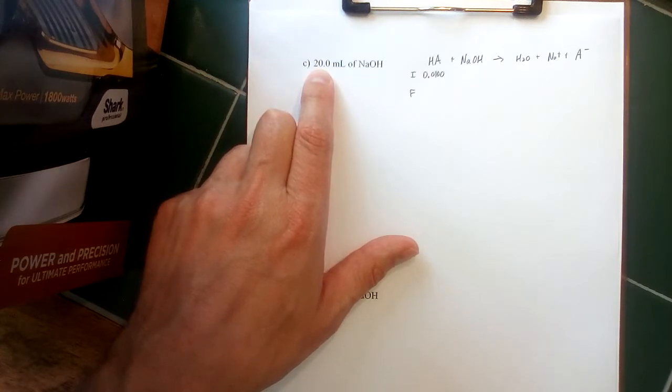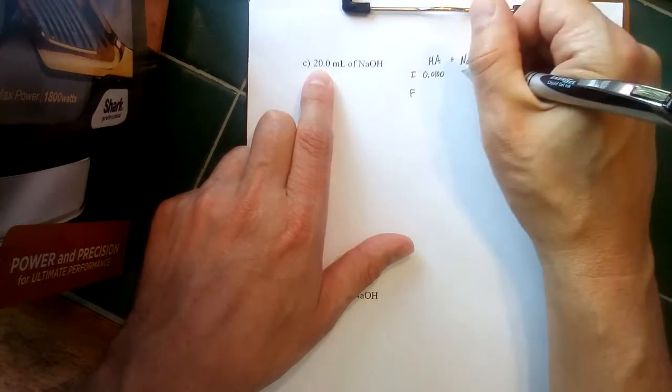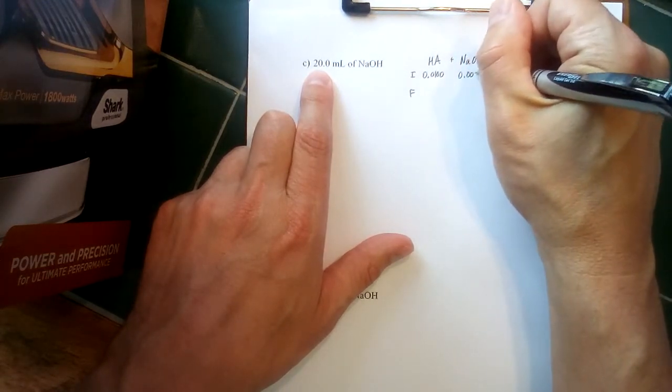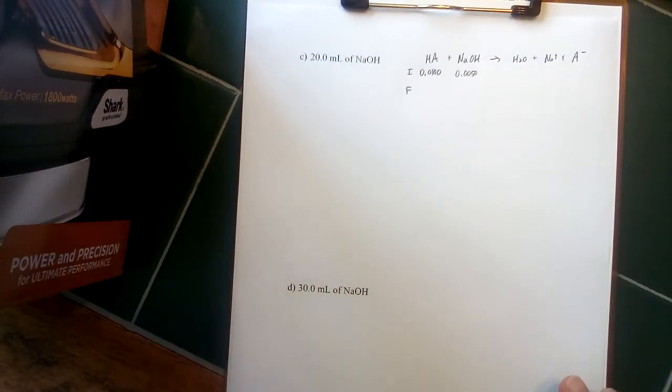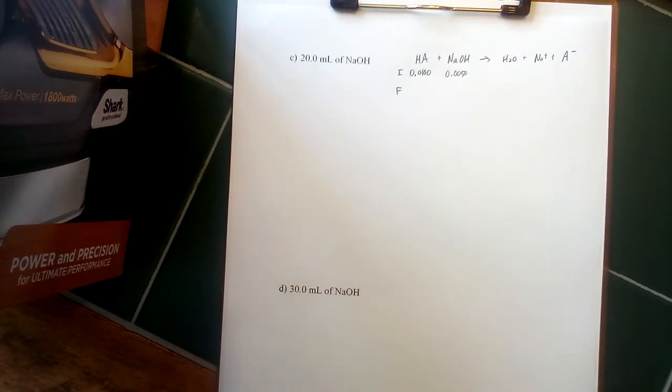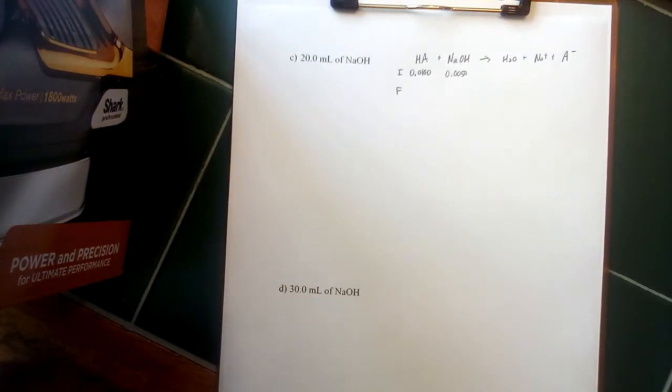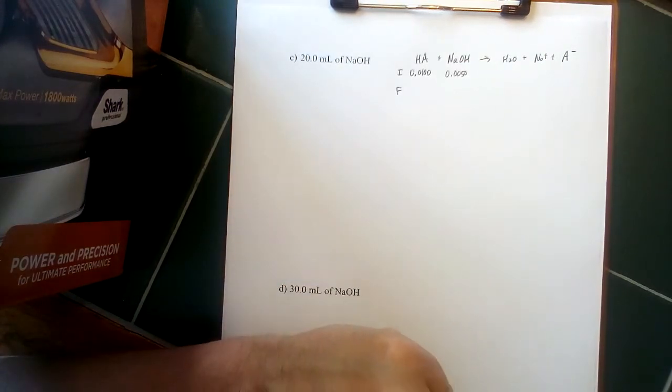So originally it was 0.0025, for this part of the problem it's going to be 0.0050. So if your problem is going in sequential increments, again you're not going to have to go back and redo that whole problem from scratch—you can build off the information that you already have.